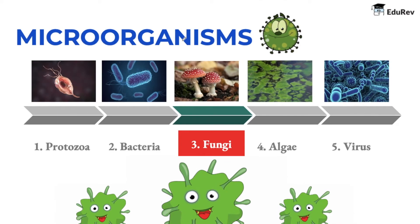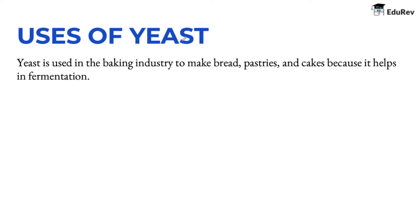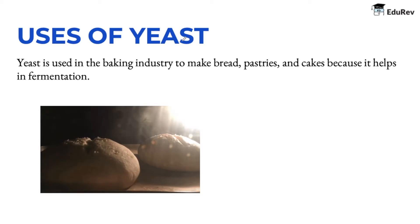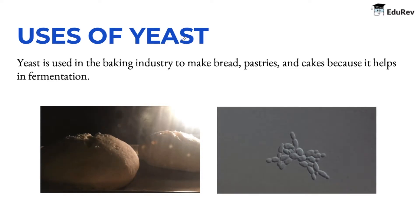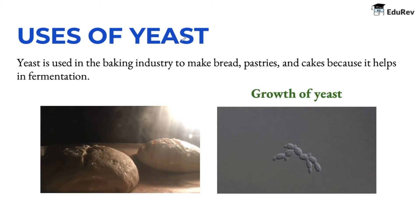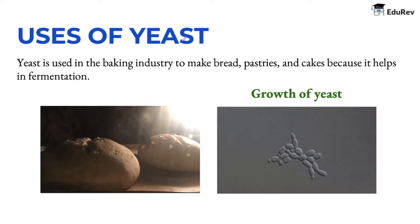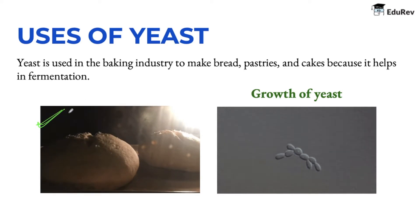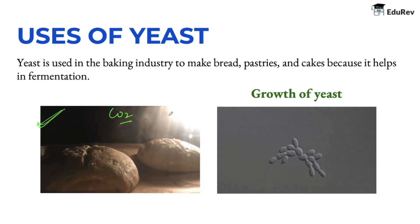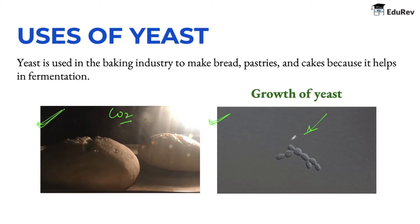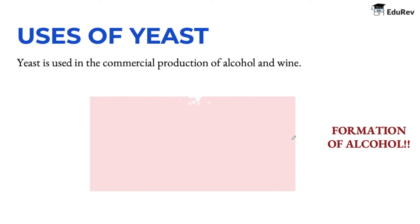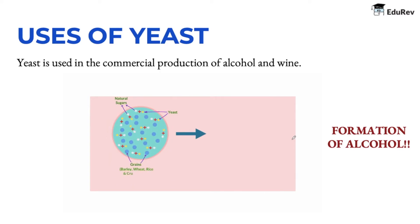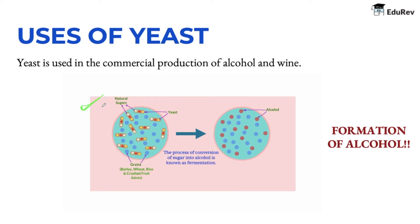Now let's move forward and see the various uses of fungi, specifically yeast. Yeast is used in the baking industry to make bread, pastry, and cakes because it helps in fermentation. It reproduces rapidly and produces carbon dioxide during respiration. Bubbles of CO2 fill the spaces in dough and increase its volume, as you can see in the animation on screen. Yeast is also used in the commercial production of alcohol and wine, which is done by growing yeast on natural sugars from juices and grains like rice, wheat, and barley.